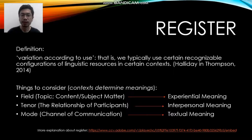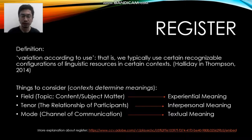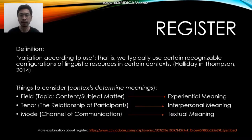The second aspect is tenor. Tenor is the relationship of participants — we try to see the interlocutors of a text or conversation, or identify who the writer and reader might be in a written text. Tenor is related to the interpersonal meaning. When we try to see the tenor of the context, it means we are trying to identify the interpersonal meaning.